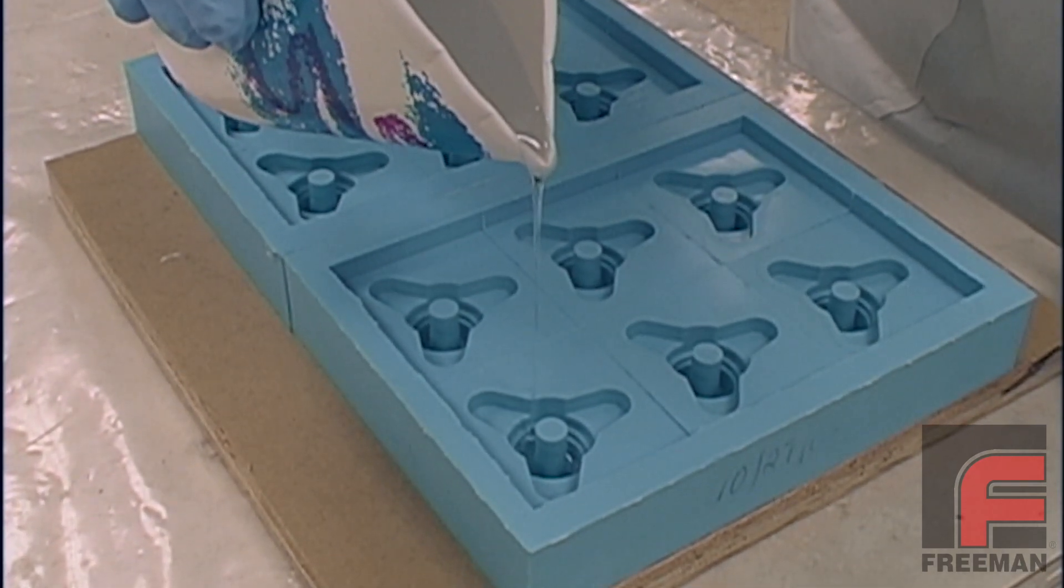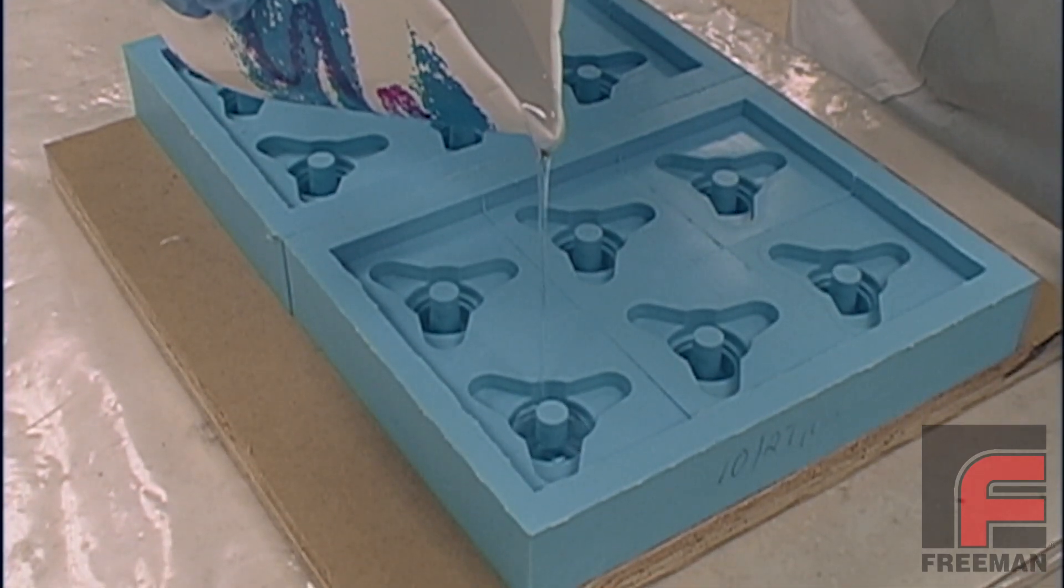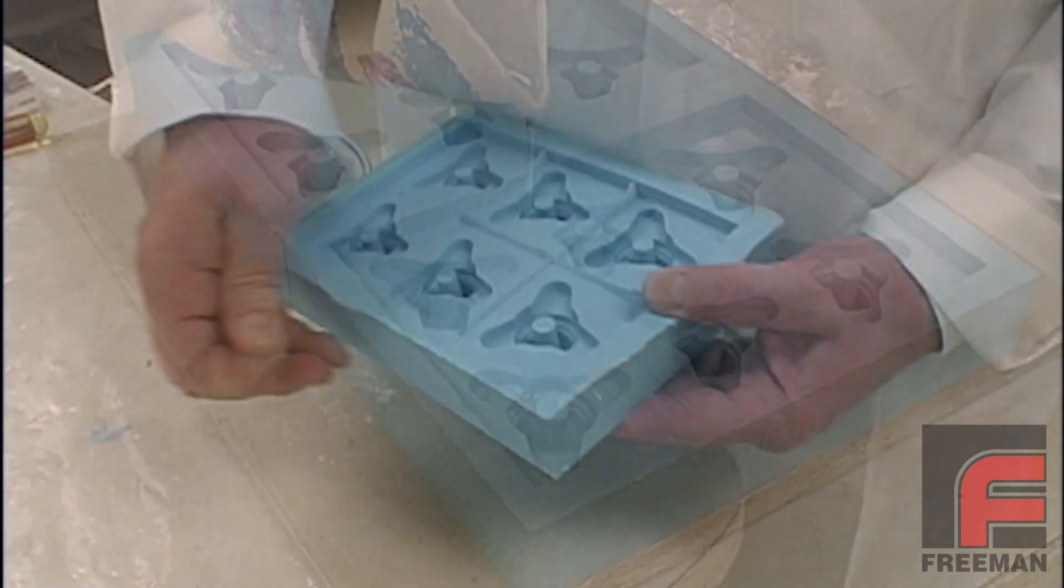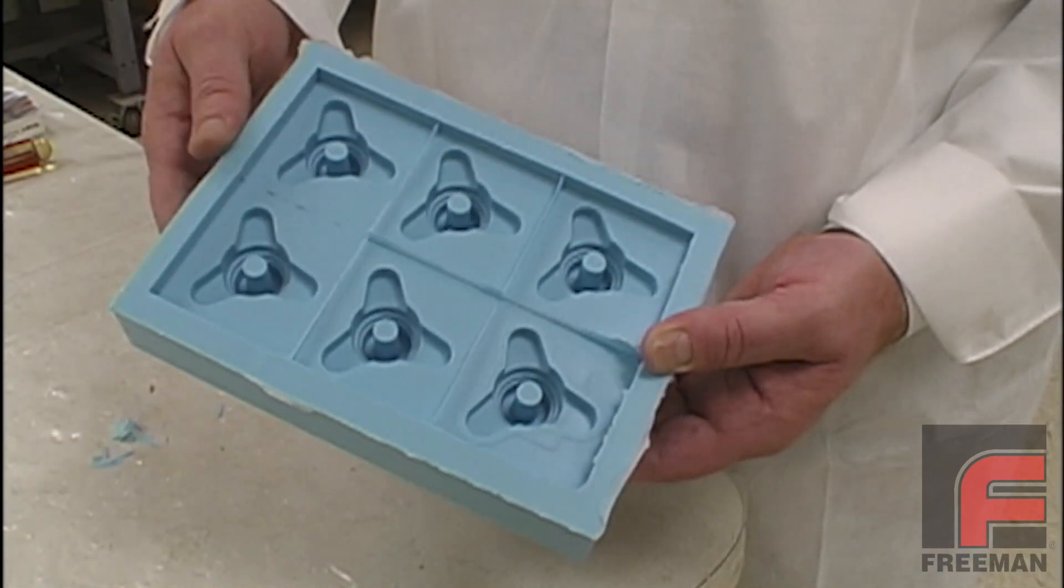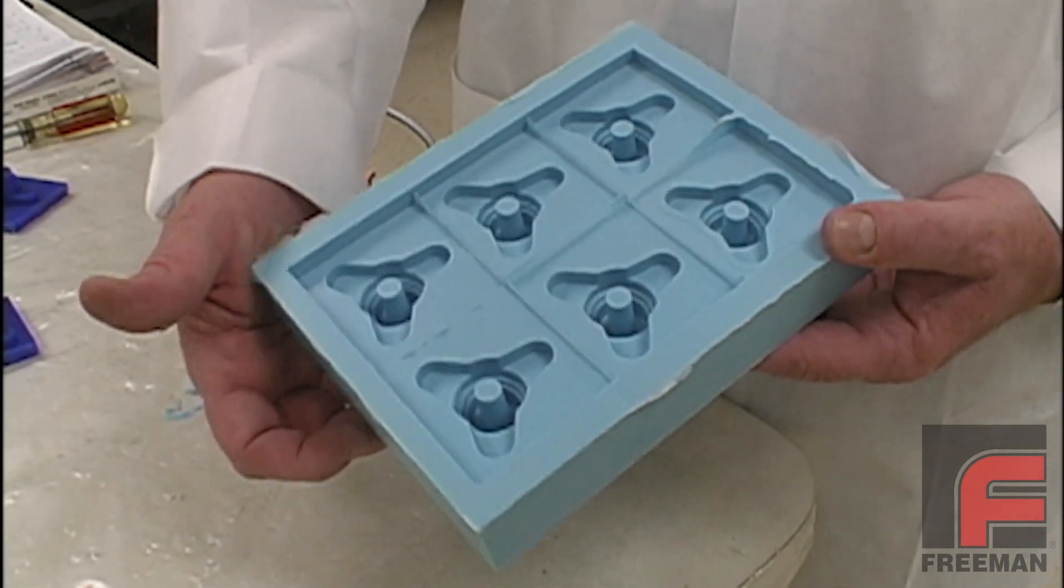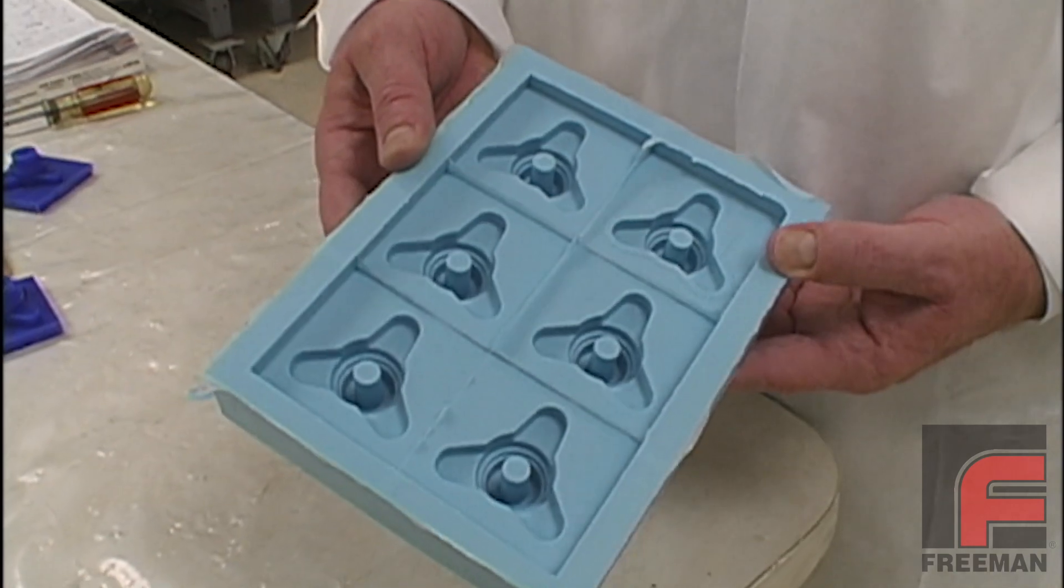When looking to create more than a few reproductions of a model, most toolmakers will create multi-cavity molds like the one shown here. We're going to demonstrate the making of a simple six-cavity open mold, although this same concept can be applied to two-part molds, clear molds, and even composite tooling.